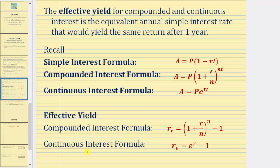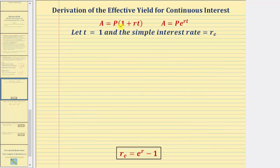Let's first discover where this formula comes from. We'll begin with the simple interest formula as well as the continuous interest formula. Remember, the effective yield is going to be the equivalent annual simple interest rate that would yield the same return after one year.